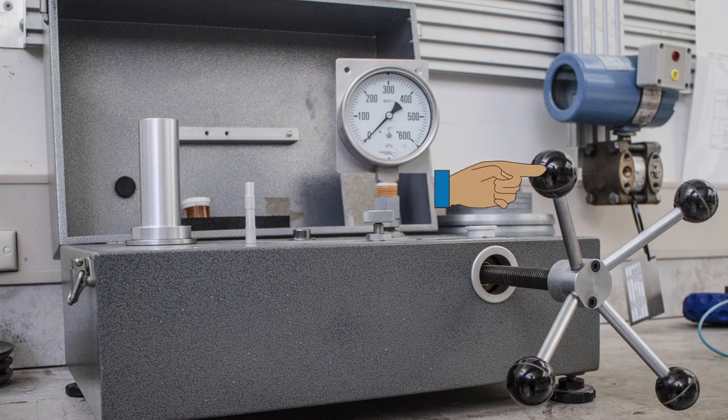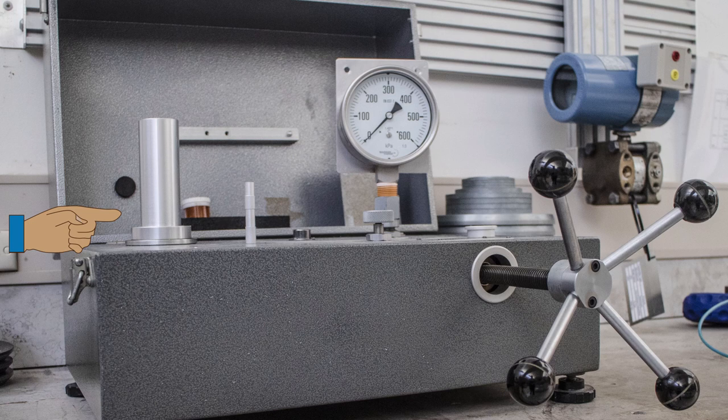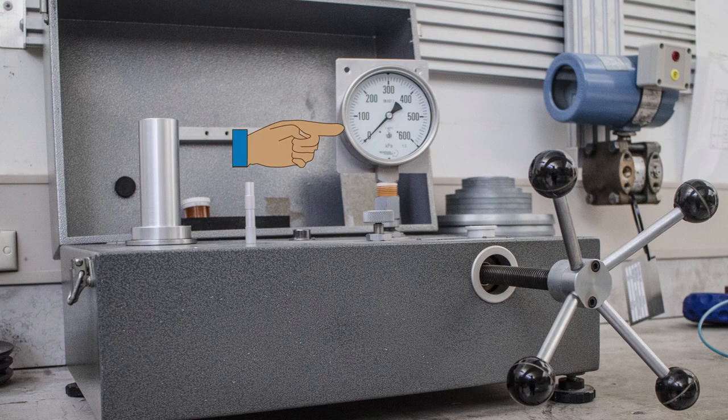The pressure is increased by turning the handle. When the pressure from the pump equals the pressure caused by the weight on the piston, the piston will pop up. The reading on the test instrument can then be checked and recorded.